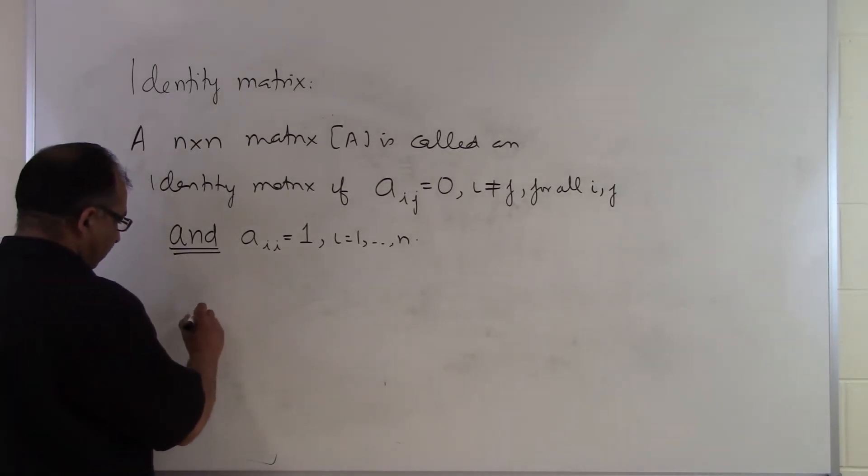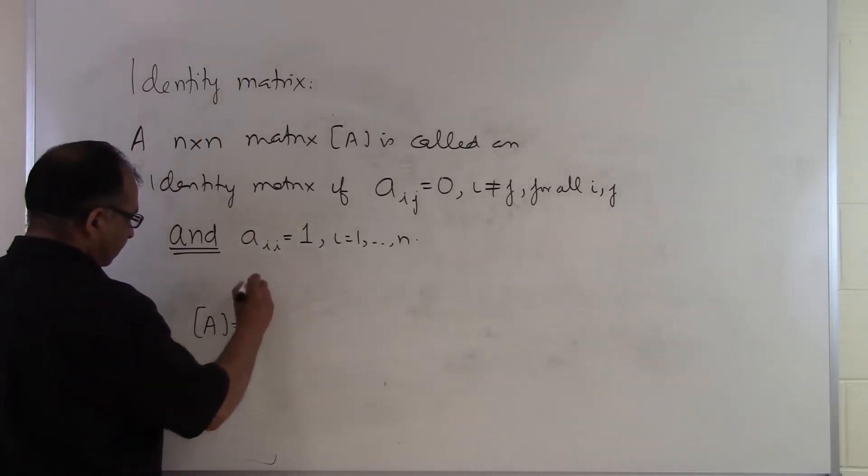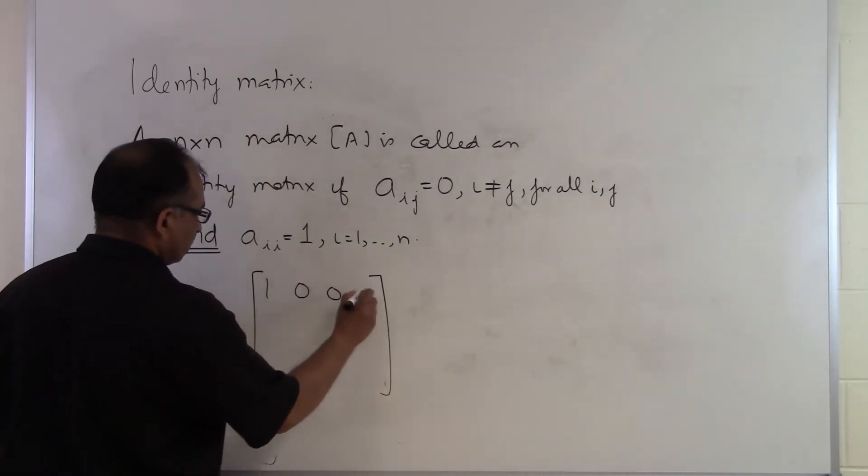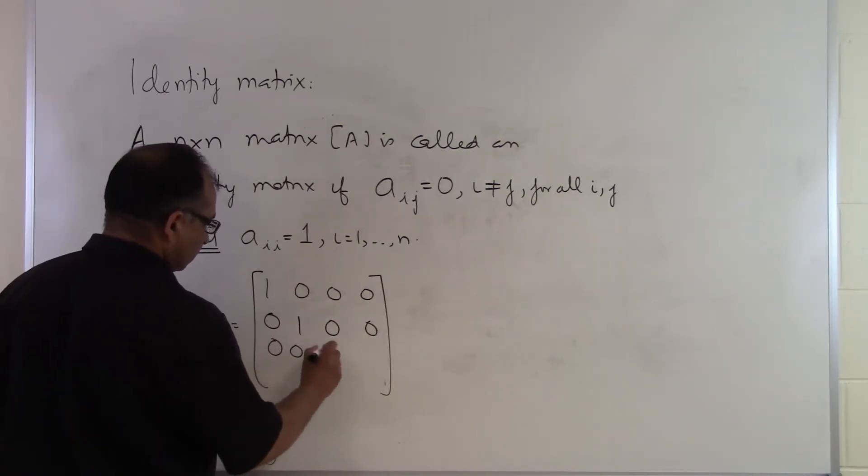Let's take an example here. So let's suppose if I have a matrix which looks like this: one, zero, zero, zero; zero, one, zero, zero; zero, zero, one, zero; and zero, zero, zero, one.